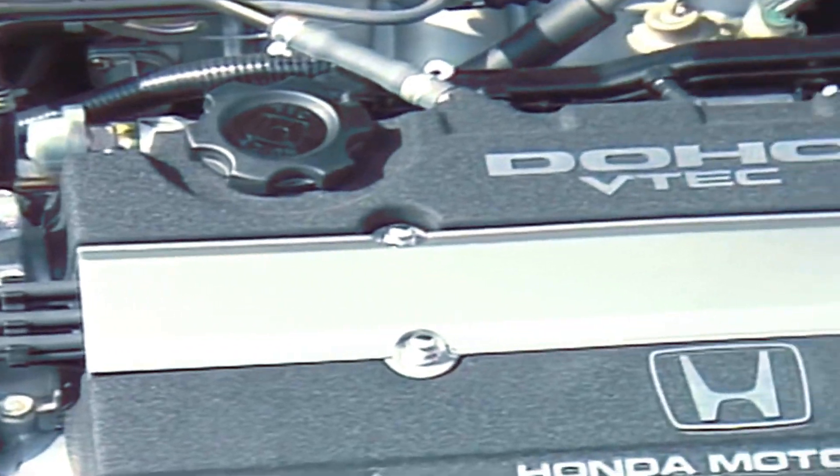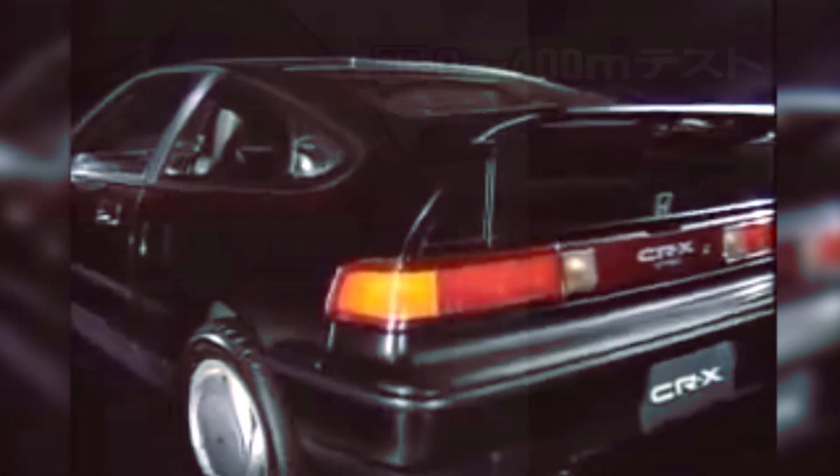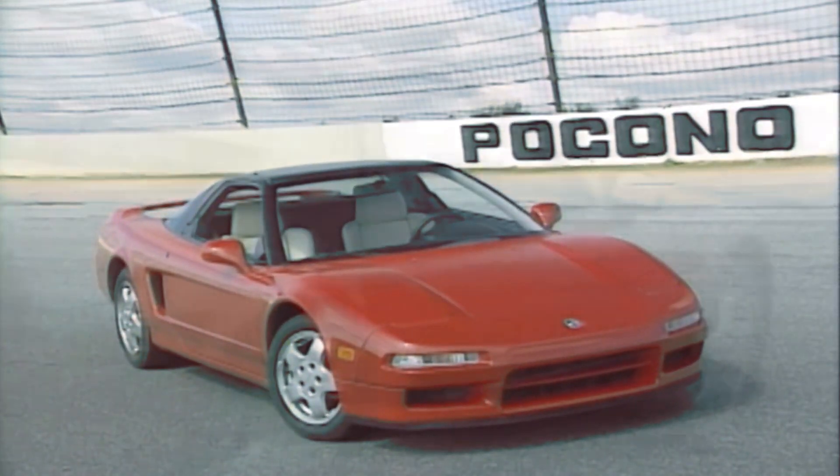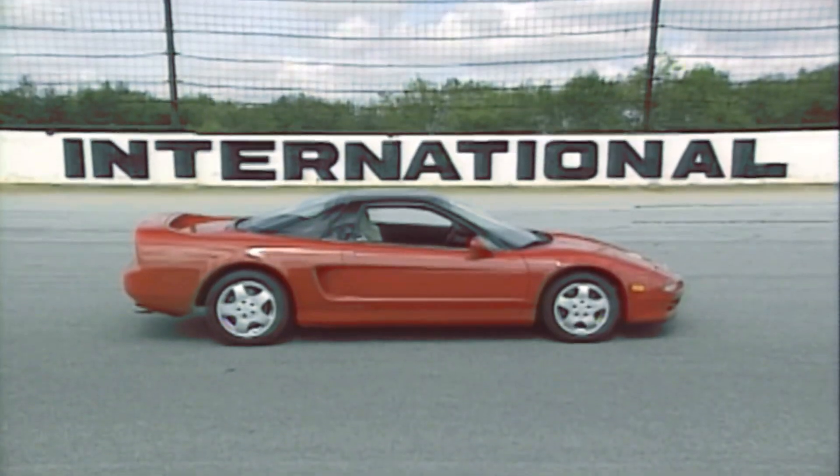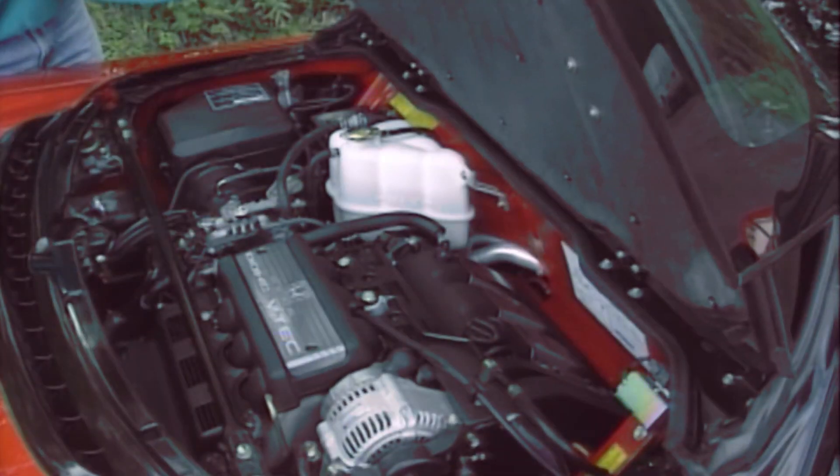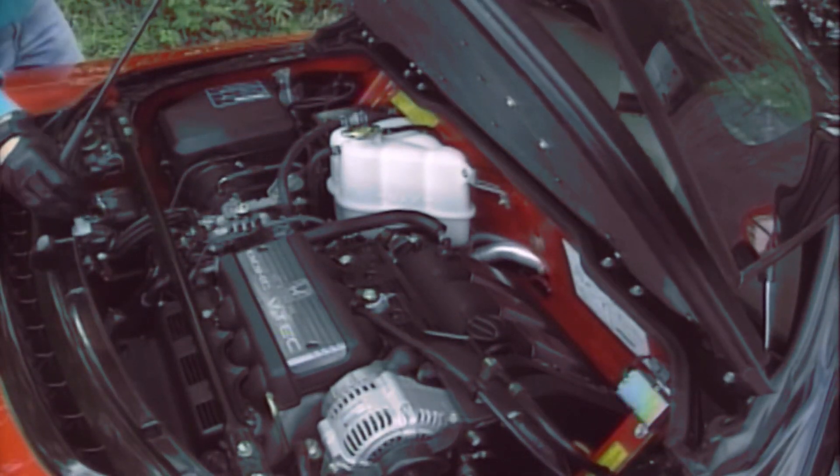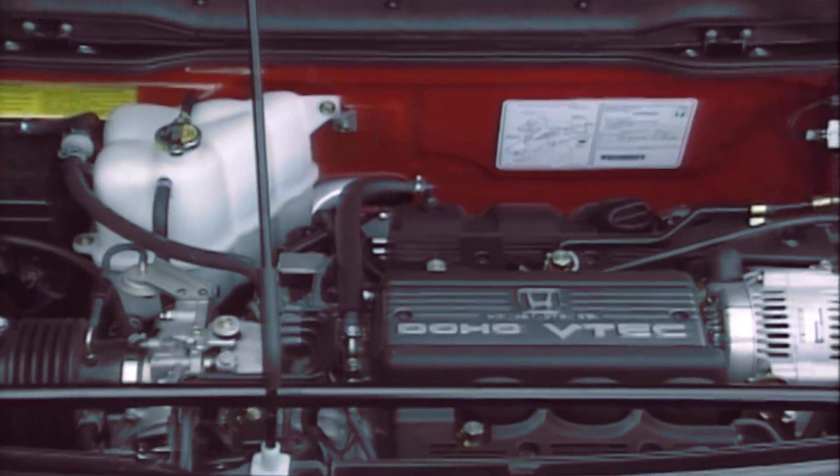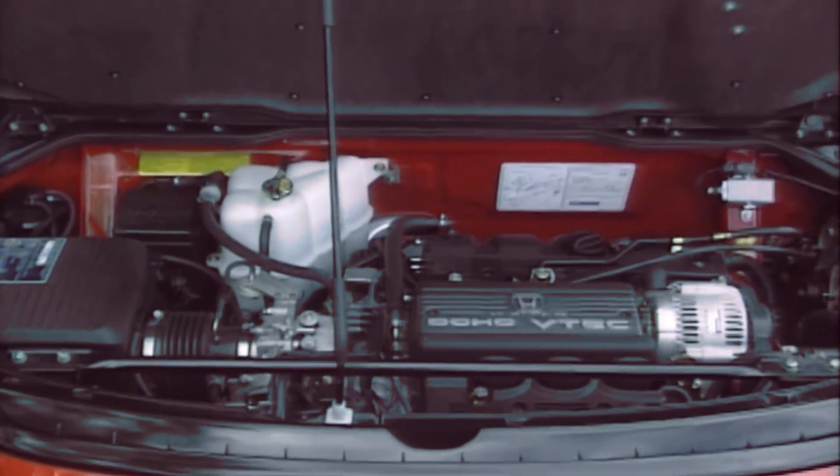That same year, Europe saw the arrival of VTEC in the Honda Civic and Honda CRX 1.6i VT using a 150 brake horsepower B16A variant. The United States market saw its first VTEC system with the introduction of the 1991 Acura NSX, which used a 3-liter dual overhead cam C30A V6 outputting 270 brake horsepower.